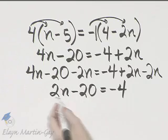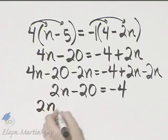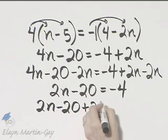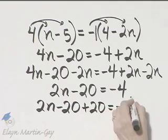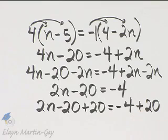I will now add 20 to both sides. Here's my left side. I'll add 20. And then don't forget, here's my right side. I'll add 20.